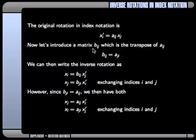Now what we'll do to make this a bit clearer is to introduce this matrix B_ij, which is the transpose of A_ij. So we can write each of the components B_ij is just A_ji. And now we can write the equation for the inverse rotation, this equation here. And where this equation comes from is that equation there.